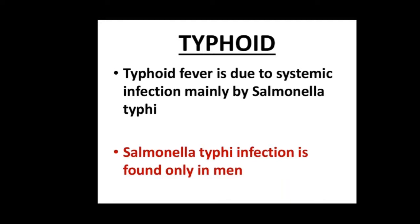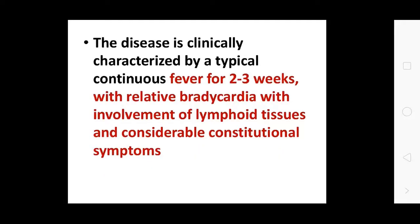Typhoid fever is due to systemic infection mainly by Salmonella typhi. The disease is clinically characterized by a typical continuous fever for 2–3 weeks with relative bradycardia, involvement of lymphoid tissue, and considerable constitutional symptoms.